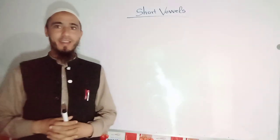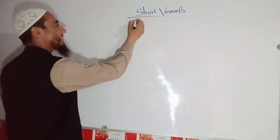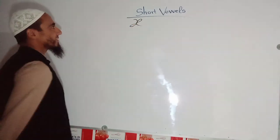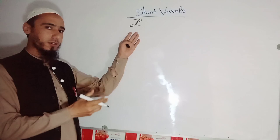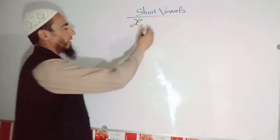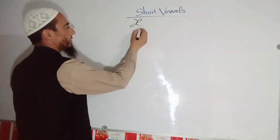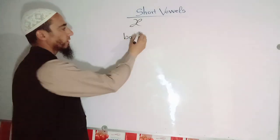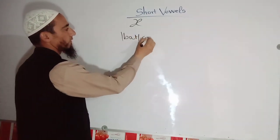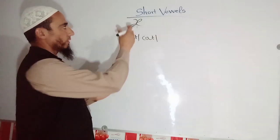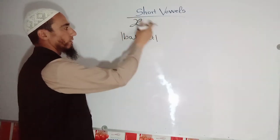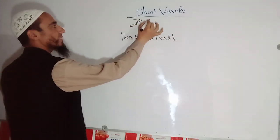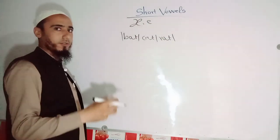How many short vowels are there? There are 7 short vowels. I am writing them one by one. The first IPA symbol is used for the short vowel /æ/ — that is the 'a' sound. For example: bat, cat, and rate. This is the 'a' sound.